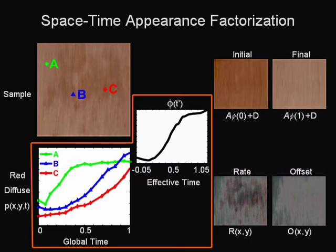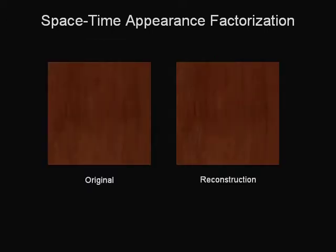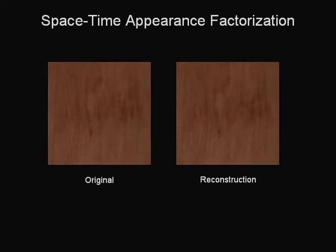Our space-time appearance factorization aligns the time varying curves from different points to very high accuracy. Here we show that the STAF model can accurately reproduce the drawing patterns in the original data.